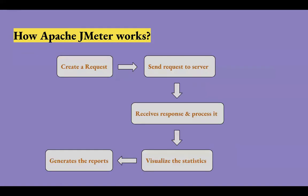Let's see how JMeter works. These are the basic steps followed by JMeter during testing. First, it creates a request based on specifications like number of users and number of threads, and sends it to the server based on the application protocol. Then it receives the response from the server, collects and processes it, then visualizes the results in statistics form such as tabular, tree, or graph format. Finally, it generates the test report in different formats like CSV, XML, HTML, or JSON as per your need.